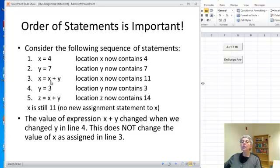And now what we're doing here is we're getting the values currently stored in x, 4, the value currently stored in y, 7. We're adding them to get 11. And we're storing that into x. So x now contains 11. The 4 is gone.